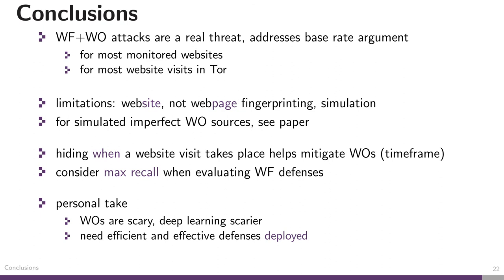Our conclusions are that website fingerprinting with website oracle attacks are a real threat, at least in the sense that they address the base rate challenge for website fingerprinting attacks. Oracles address this for most monitored websites and most website visits done over Tor, as measurements tell us. Key limitations include that we only do website and not web page fingerprinting, and everything is simulated. One thing we also simulate are imperfect sources for website oracles — a website oracle could have a false positive rate — but it does not change the picture much. One potential mitigation is to hide when a website visit takes place, but this is extremely costly for an extended period. When constructing and evaluating website fingerprinting defenses, I would urge you to consider the maximum possible recall, because false positive rates go down significantly with website oracles, making precision a less useful metric. My personal take is that website oracles are scary, deep learning is even scarier, and we need efficient and effective defenses deployed sooner rather than later.